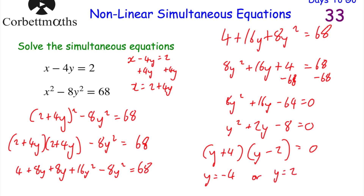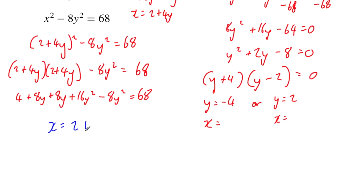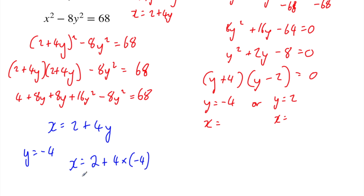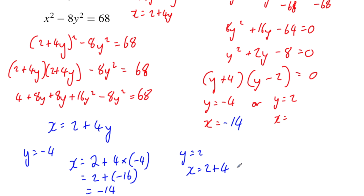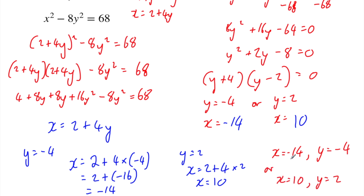Now we find the values for x using x equals 2 plus 4y. When y equals minus 4: x equals 2 plus 4 times minus 4, which is 2 plus minus 16, so x equals minus 14. When y equals 2: x equals 2 plus 4 times 2, which is 2 plus 8, so x equals 10. Our two solutions are x equals minus 14, y equals minus 4, or x equals 10 and y equals 2.